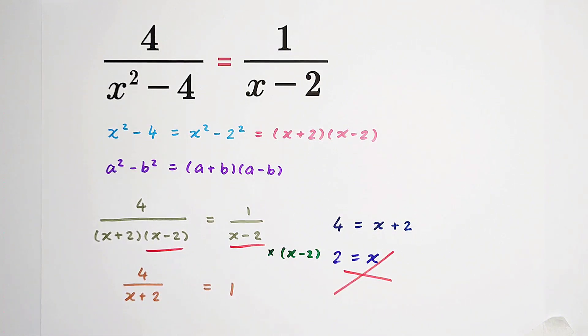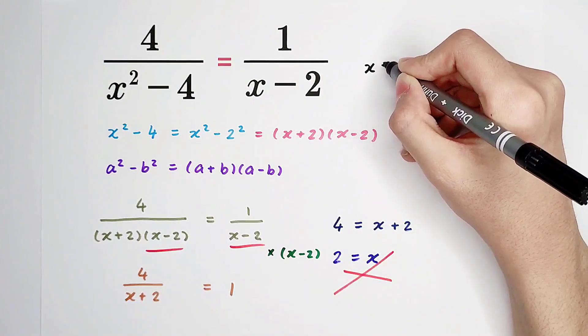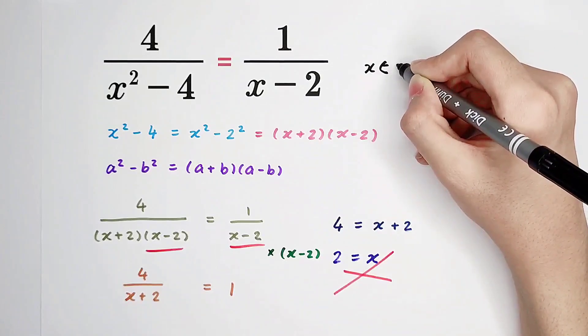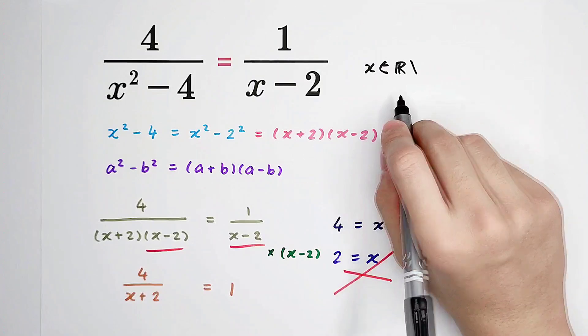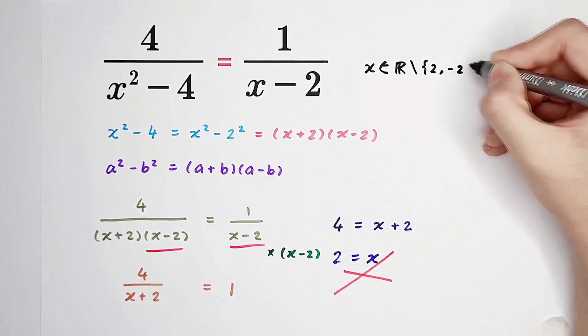We can never multiply both sides of an equation by 0. The domain of x is actually x can be any real number without 2 and negative 2.